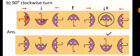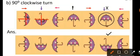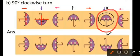Here the umbrella shape is moving by 90 degrees clockwise each time. So this shape will be wrong, and the corrected one is like this.